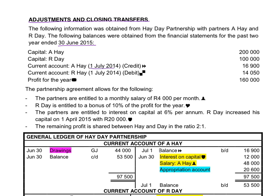The current account balances are provided at the beginning of the year because we never write in the current account during the year. We record all the adjustments in connection with partners at the end of the financial year. The current account of Hay has a credit balance of $16,900 because he did not take all the money that he was entitled to at the end of the previous year, so the business actually owes him the $16,900.